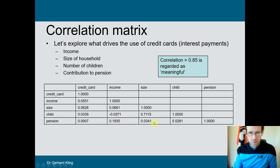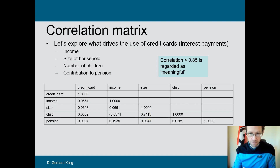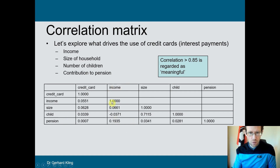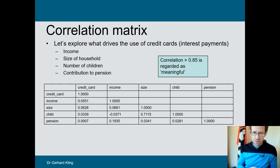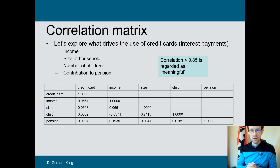You see a positive relationship between household size and number of children, but this is simply by default — it's how we calculate household size. Other relationships seem quite weak. There is an income-pension relationship: households with higher income are more likely to contribute to a private pension, which is not a big surprise. This is an interesting way to explore your whole dataset and see if there are any relationships worth studying further using regression analysis.